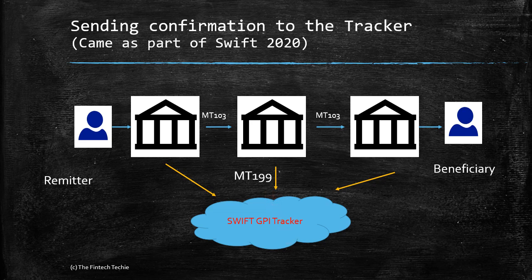Since the GPI tracker has the MT199, it can tell you at any point where the message lies. Now, a stop and recall message may be required because a payment was sent by mistake, sent twice, or sent fraudulently — and a supervisor wants to stop and recall it. This is where GSRP helps.